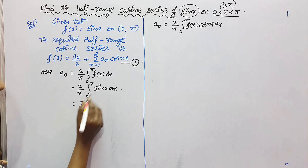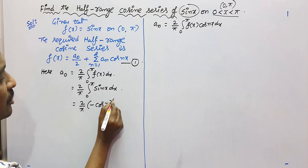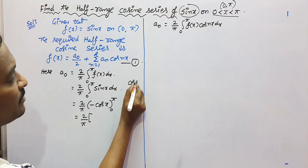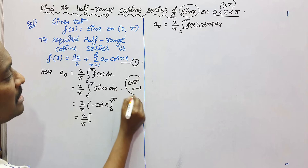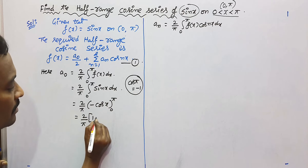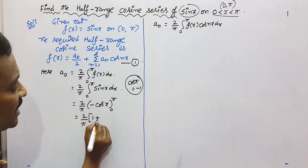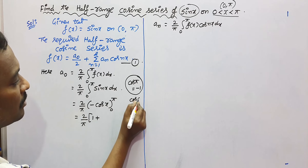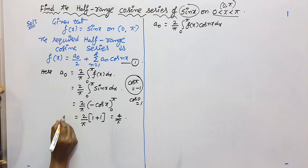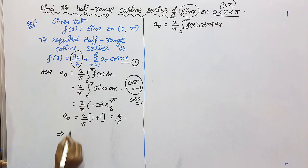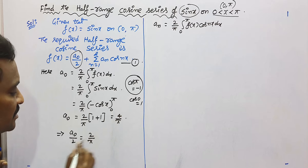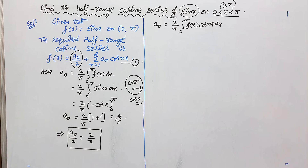The integral of sin(x) is −cos(x), evaluated from 0 to π. Applying the upper limit: −cos(π). Since cos(π) = −1 (cos of odd multiples of π is negative), we get −(−1) = 1. Applying the lower limit: −cos(0) = −1, giving +1. So 1+1 = 2, and (2/π)·2 = 4/π. Therefore a0 = 4/π, and a0/2 = 2/π.